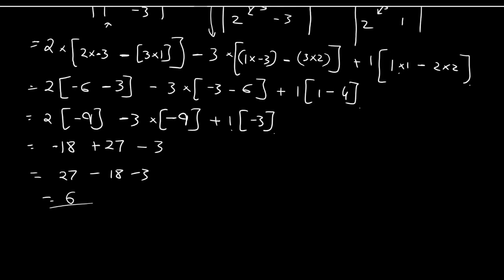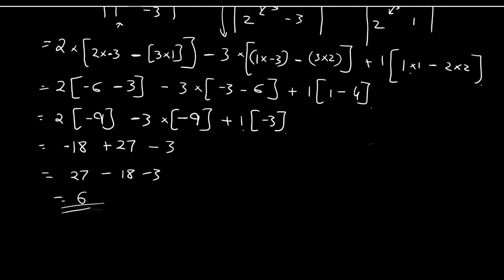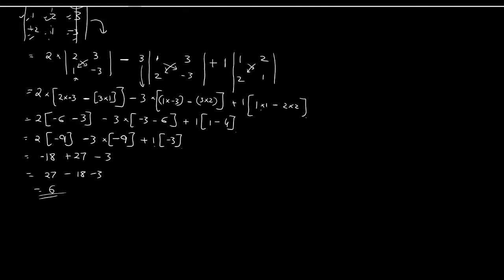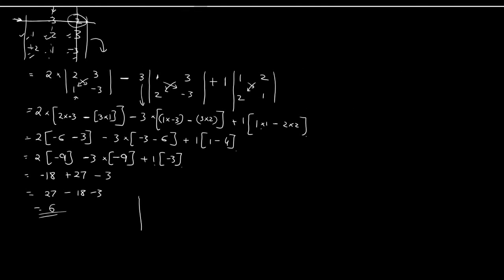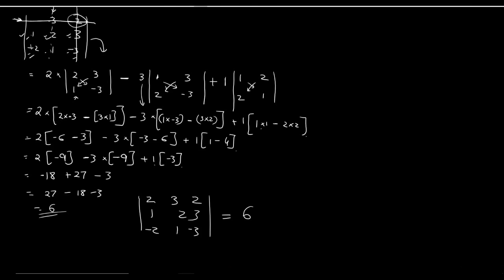So the value of this third order determinant — the matrix with entries 2, 3, 2, 1, 2, 3, −2, 1, −3 — is equal to 6.